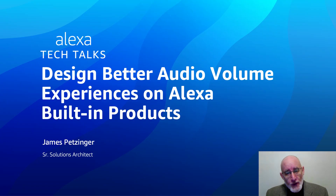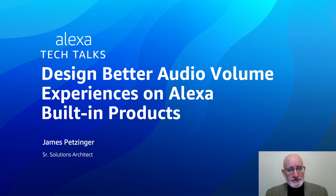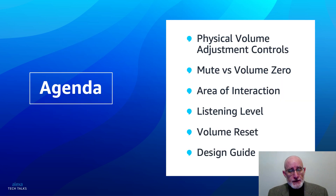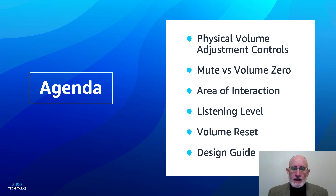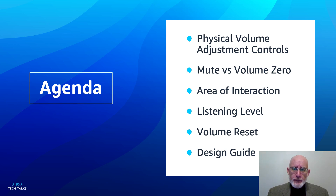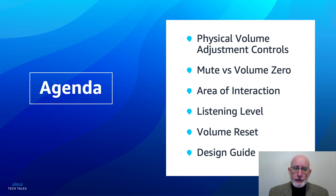Today I will be talking about what we can do to design better audio volume experiences on Alexa built-in products. We will be talking about physical volume adjustment controls integrated into Alexa built-in products, the difference between mute and volume zero, area of interaction and how that is important for the user experience, listening level, volume reset, and finally a design guide available to developers of ABI products to help enhance the design of the audio volume experience on your products.